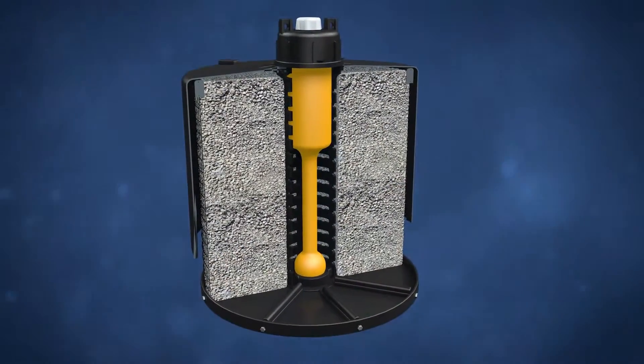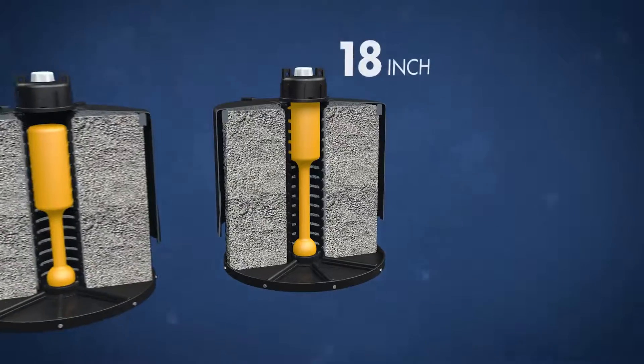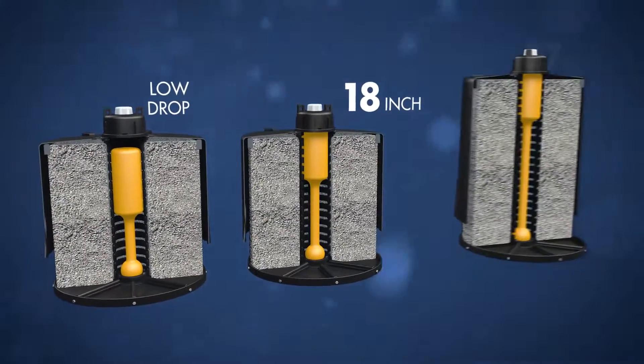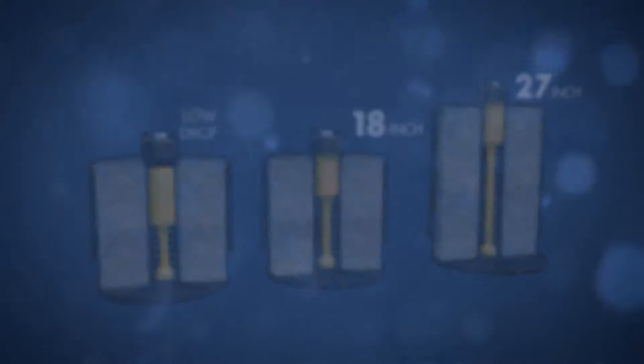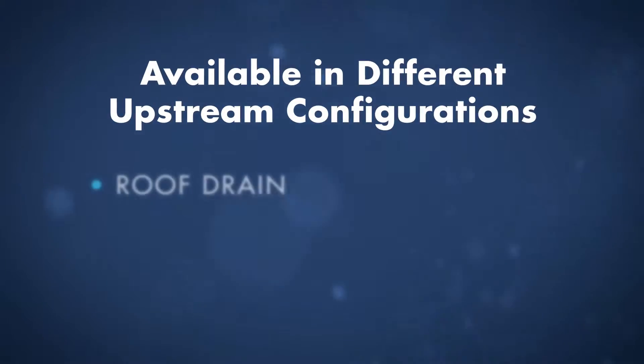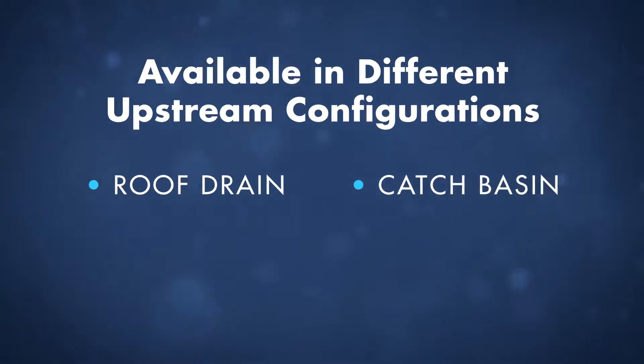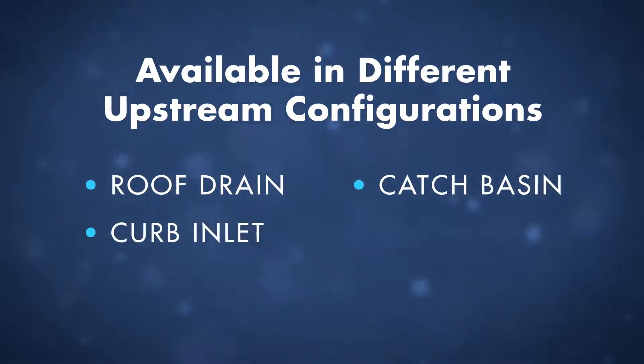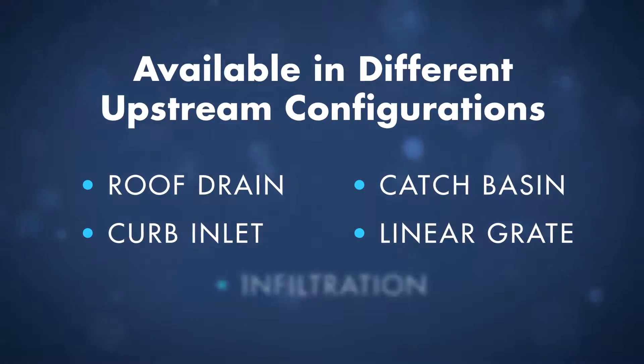The storm filter is available in multiple cartridge heights to meet site-specific hydraulic needs, and is available in different upstream configurations, including roof drain, catch basin, curb inlet, linear grate, and infiltration.